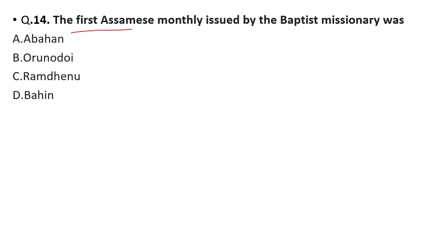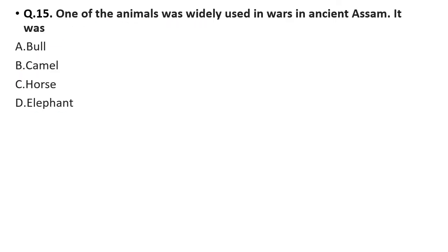Question 14: The first Assam monthly magazine was issued by the Baptist missionary. Options: Abahan, Arunodoi, Ramdenu, or Bahin. This is one of the most important questions asked many times in exams. The correct answer is option B, Arunodoi.